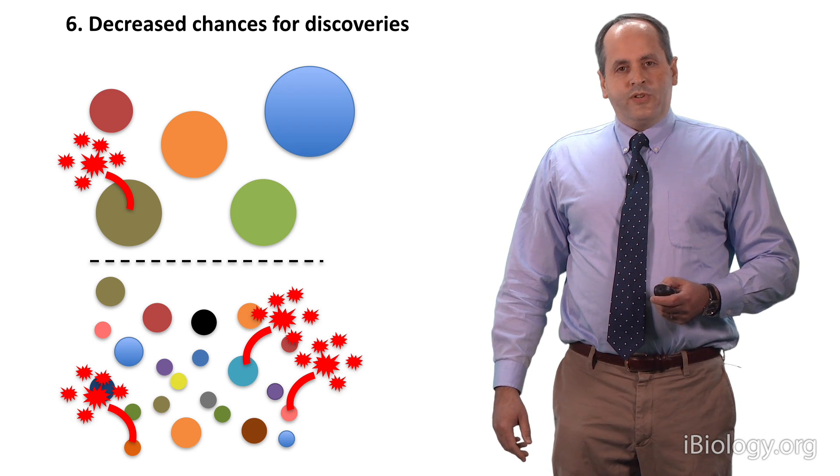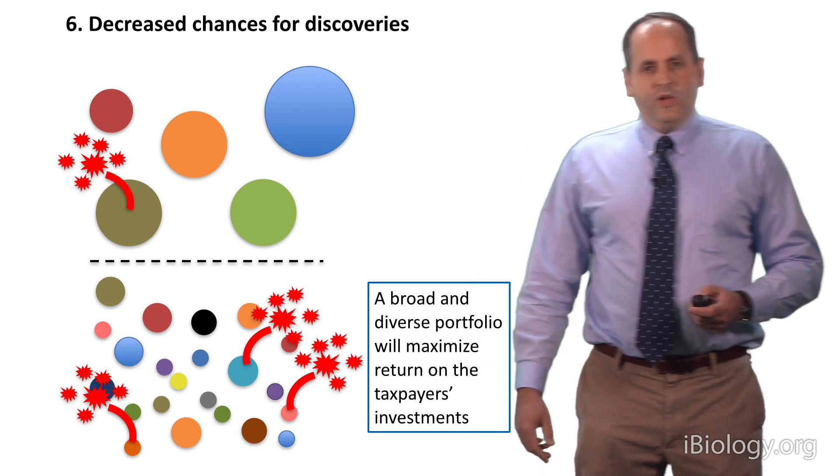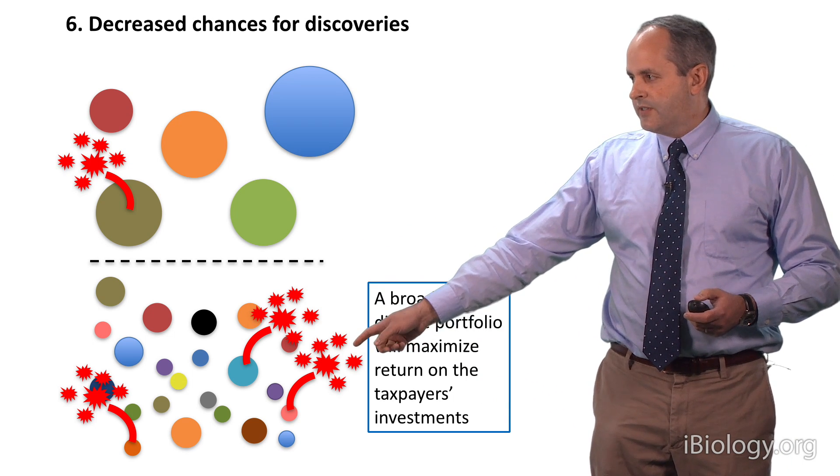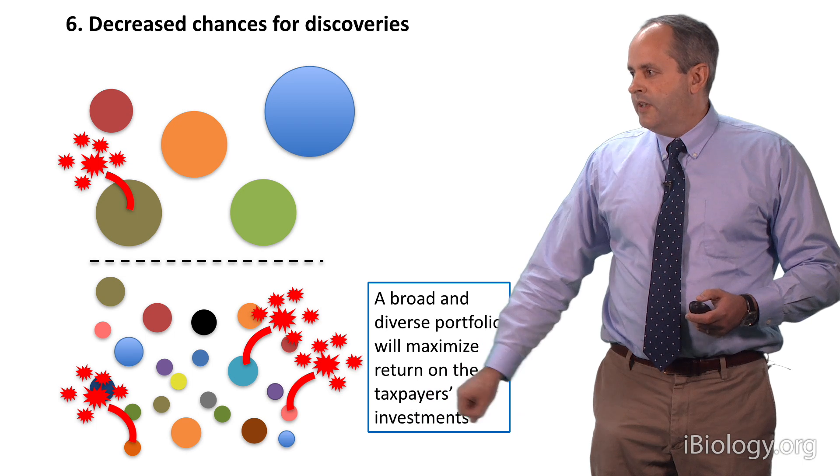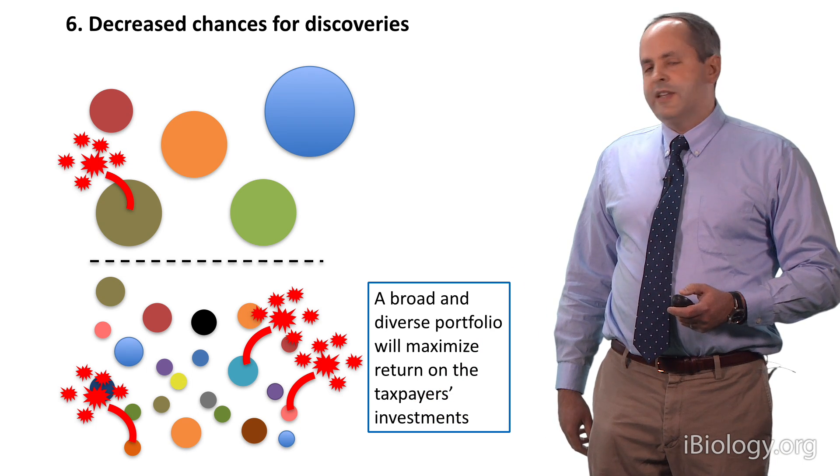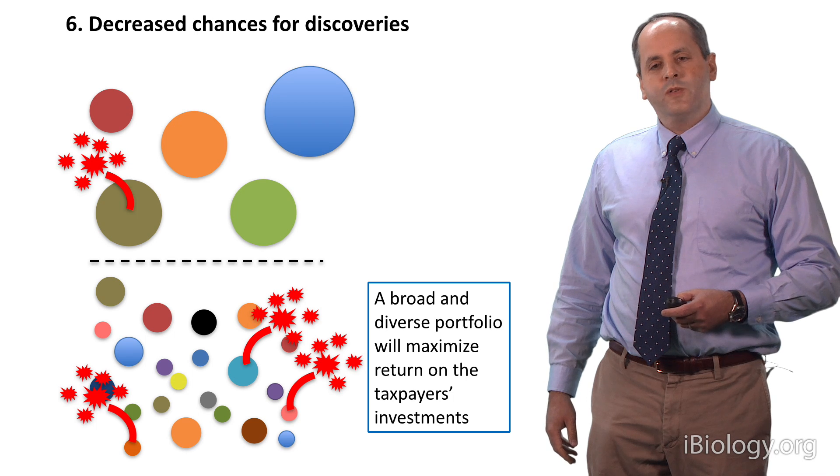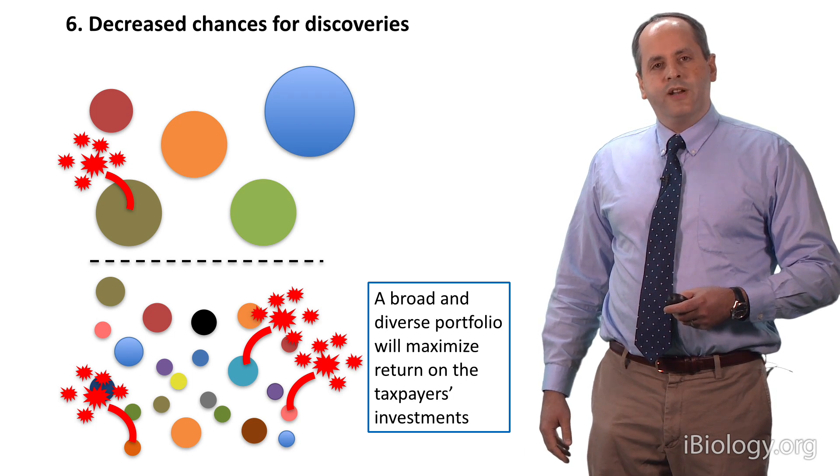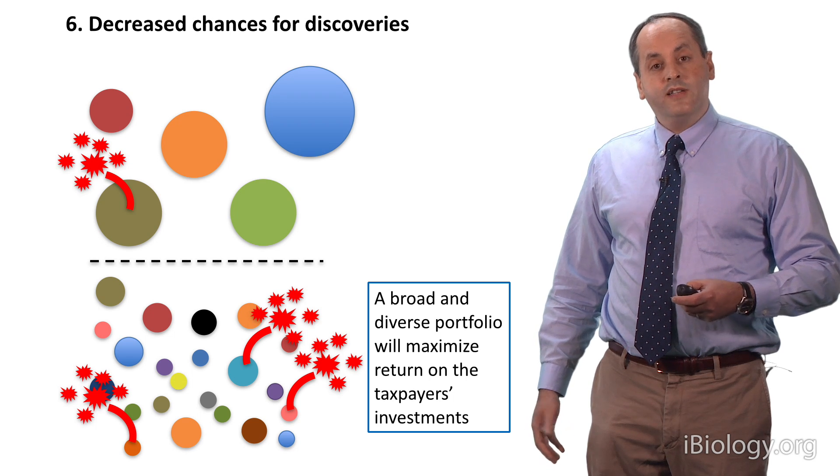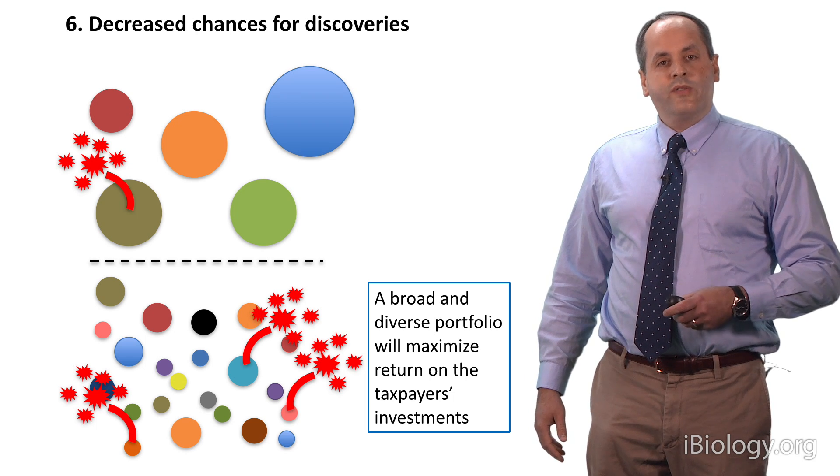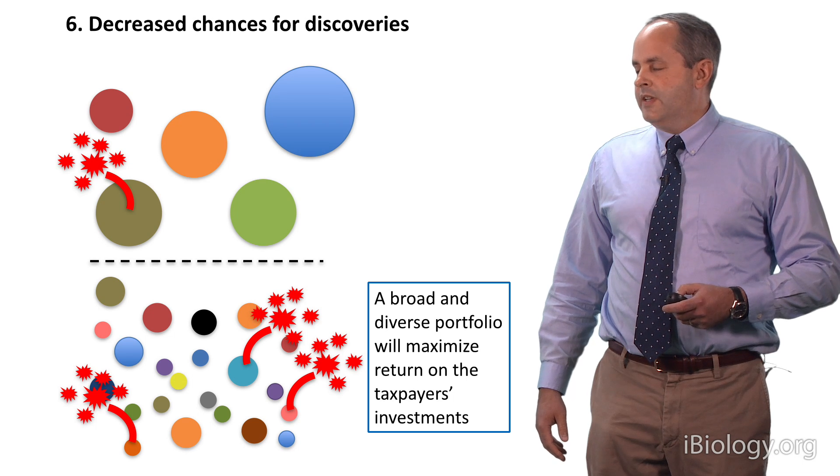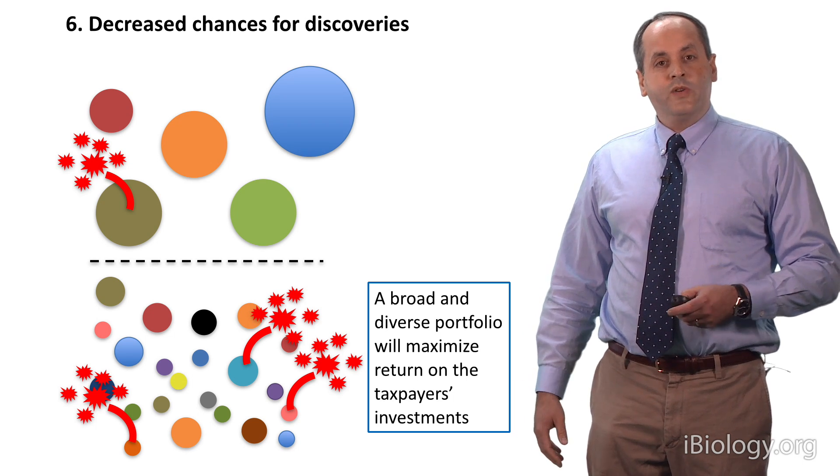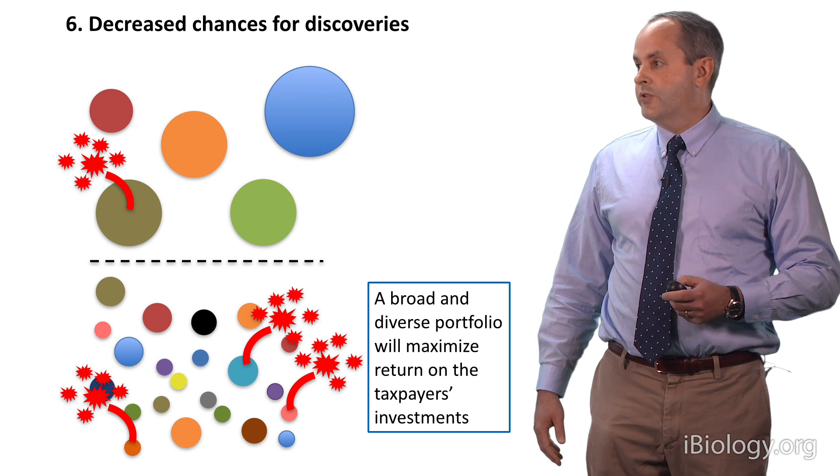So what do all these things add up to? Well, what they add up to, I think, is that having a broad and diverse portfolio will maximize the return on the taxpayers' investments. That is, having more research groups funded, doing more different kinds of research, will lead to better returns because of increased productivity, increased chances for breakthroughs, and increased efficiency. Now, those things all make sense a priori, but being scientists, we might ask, are there any data to support those conclusions? And it turns out that there are.